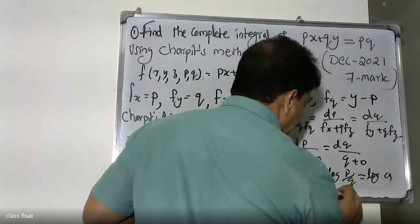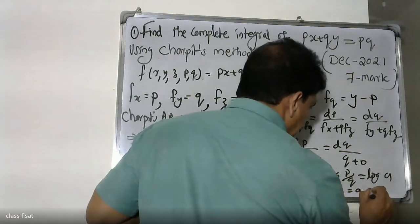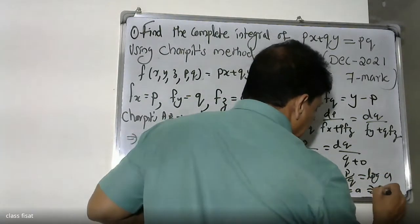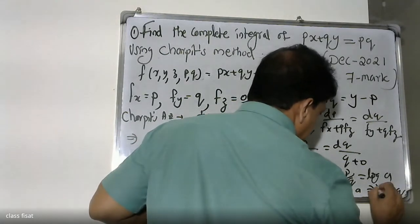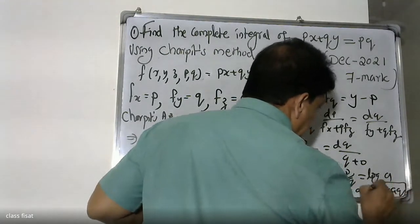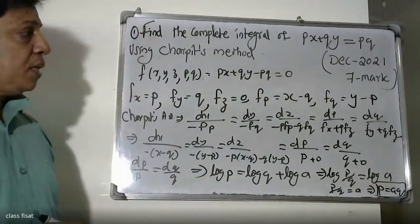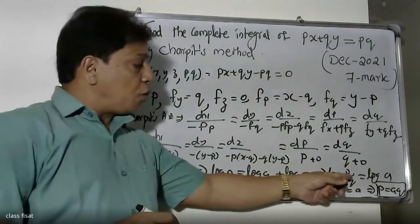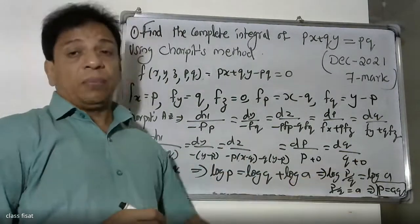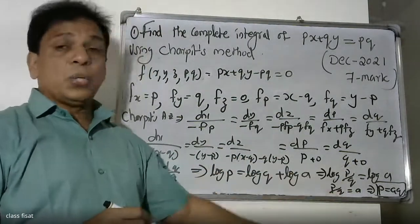Therefore p by q equals a, which means p is equal to aq. So we have obtained the relation p equals aq, where a is an arbitrary constant.